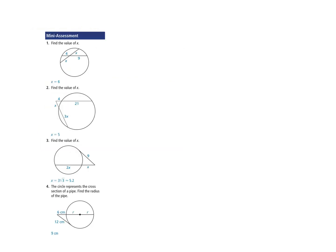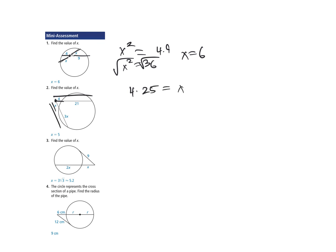Mini-assessment. Problem 1: vertex is on the inside, so part times part equals part times part. X times X equals 4 times 9: X squared equals 36, take the square root, X equals 6. Problem 2: vertex is on the outside. Part 4 times whole 25 equals part X times whole 4X. So 100 equals 4X squared. Divide by 4: X squared equals 25. Take the square root: X equals 5.